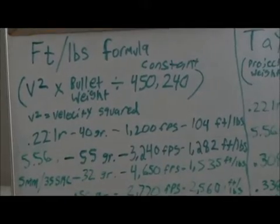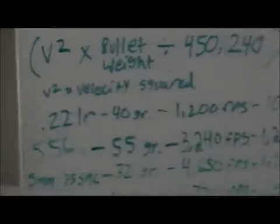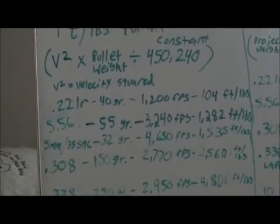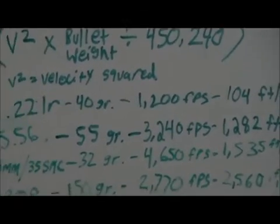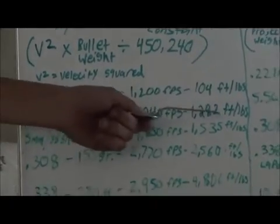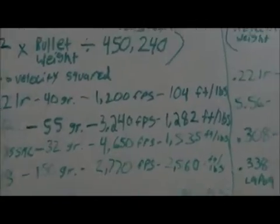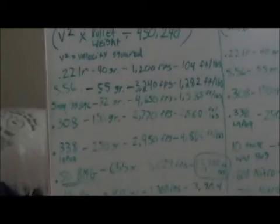As you can see here, a 22 LR has 104 foot-pounds. A 5.56 or 223, which is what the military uses in M4s and M16s and the civilian version AR-15, has a foot-pound measurement of 1,282. A 5mm .35 SM, which is the fastest rifle cartridge ever made, goes 4,650 FPS and has 1,535 foot-pounds.